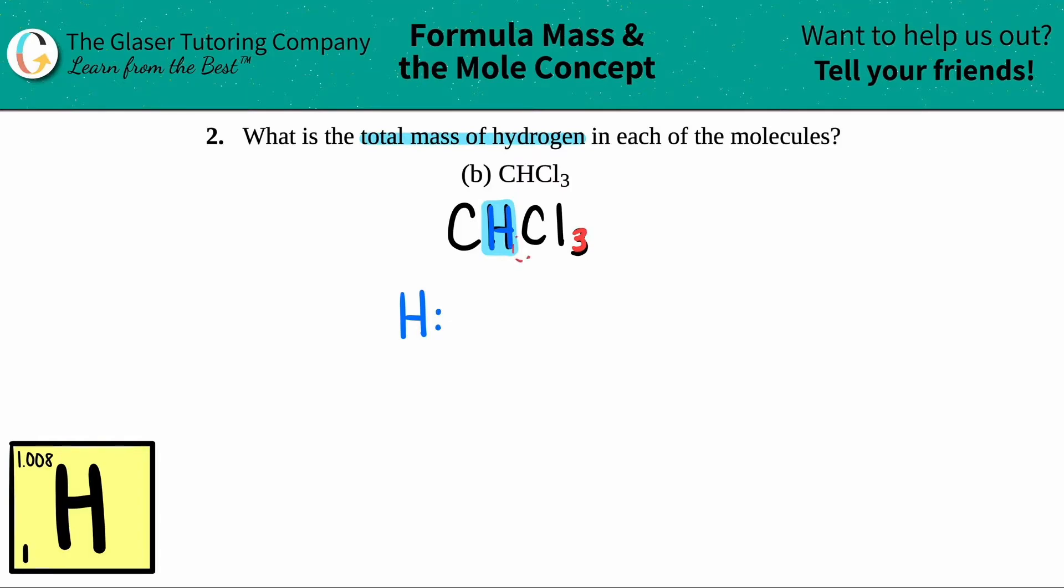However, there's no number right next to the H. If there's no number, it's a secret one. You have one hydrogen. That's how many total hydrogens you have in your compound. You have one hydrogen. And the same thing goes for the carbon. You have one carbon.